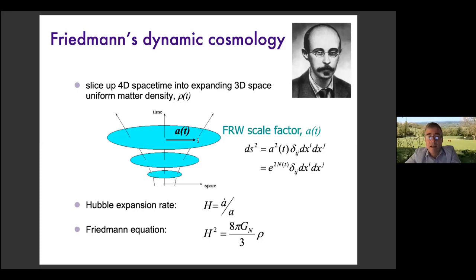We just have to keep track of the scale factor of the universe, a(t) — or sometimes we use the logarithm of that, N, which is the logarithmic expansion. In the 1920s onwards, people have been able to begin measuring the expansion rate of the universe — the Hubble constant today, but more generally through time, the Hubble rate H = ȧ/a. Through Einstein's equations this is related to the energy density of matter in the universe. This is the background cosmology which most of us learn from the cosmology textbooks. What I'm interested in is that the detailed tests in perturbation theory come from studying fluctuations about that model.